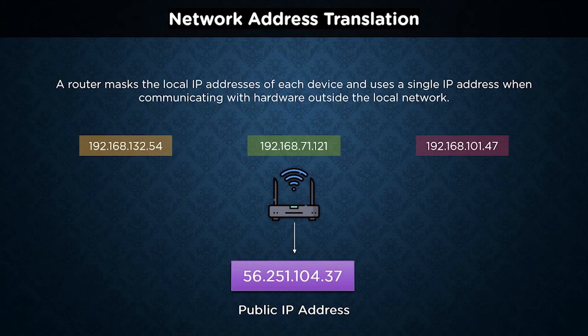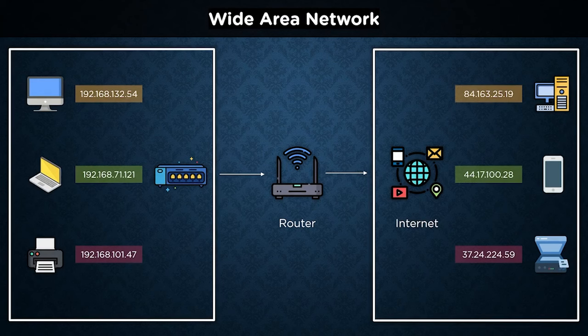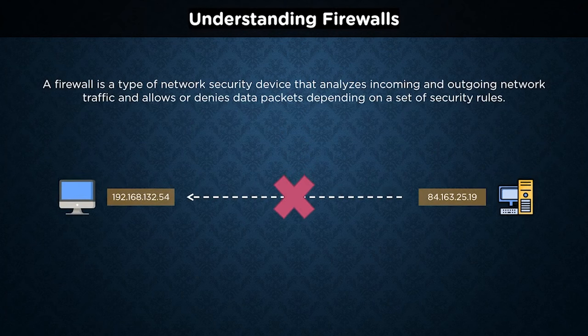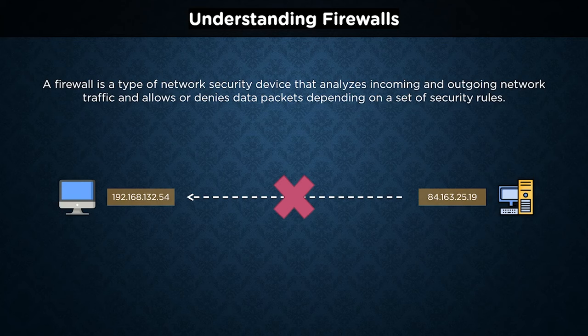Network Address Translation is the method of translating one IP address to another while packets are in transit through a router. This improves security and reduces the number of IP addresses required by a company. Once a router receives information that must be transmitted to a local device, it checks the internal routing tables to determine the correct internal IP address and destination. However, if a device from an external network wants to communicate directly with a local network device, this poses a significant security risk — and all entry and exit rule creation can be handled by a firewall.